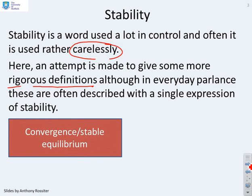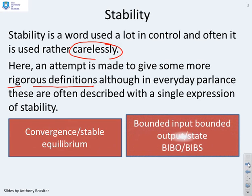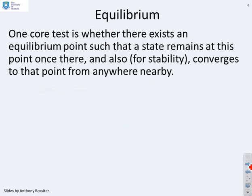We want to look at concepts of convergence and stable equilibrium, and concepts of bounded input, bounded output, and bounded input, bounded state. One core test is whether there exists an equilibrium point such that the state remains at this point once it gets there. And also, for stability, what you'd like is that the state converges to this equilibrium point if it happens to be at any point nearby.